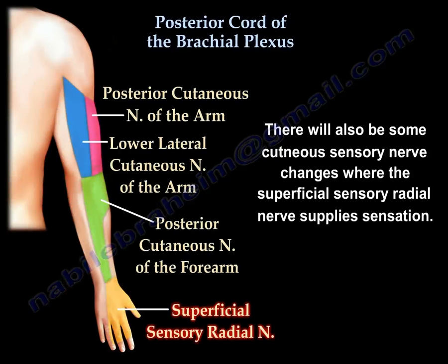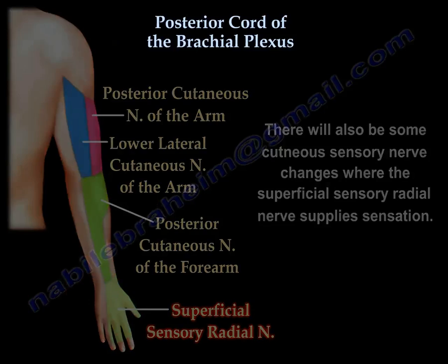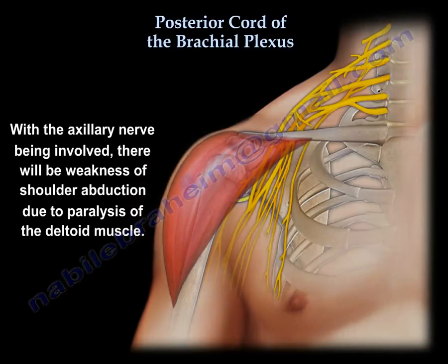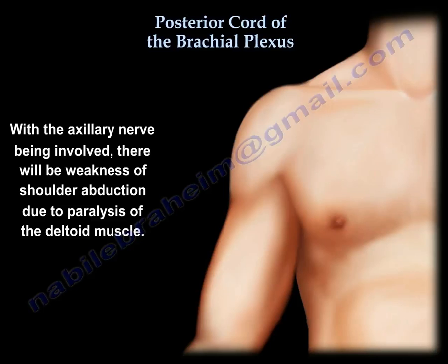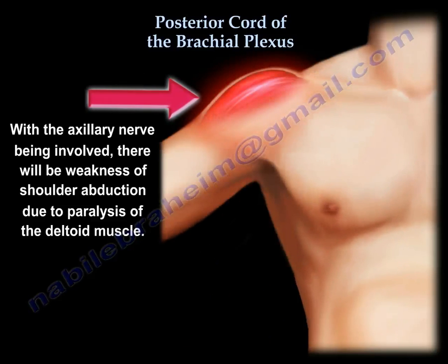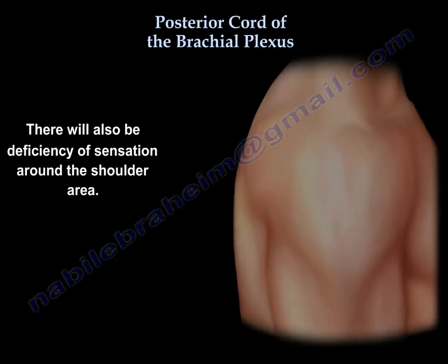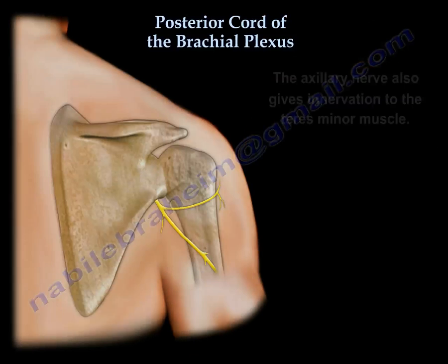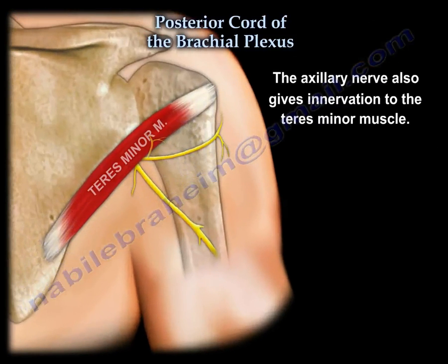Of particular importance is the dorsolateral aspect of the hand, where the superficial sensory radial nerve provides sensation. The axillary nerve will cause weakness of abduction due to deltoid paralysis, and will also produce sensory deficiency around the shoulder area. Remember that the axillary nerve also gives innervation to the teres minor.